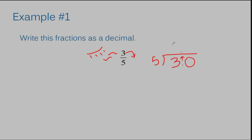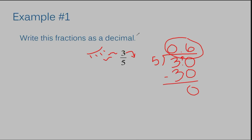Five cannot go into three, so I can add a zero here. Remember our rules for long division — does McDonald's sell burgers? If you're not familiar with long division, you may need to check out my long division video. Five does not go into three, so you ask yourself how many times does five go into thirty — it goes in six times, and it is thirty exactly, so you subtract and get zero. You have nothing left to bring down, so your answer is six tenths, or 0.6.